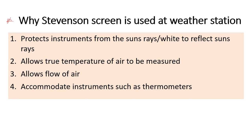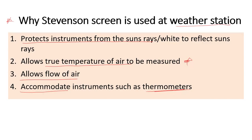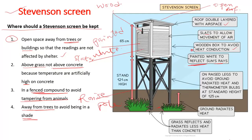You may see questions asking why the Stevenson screen is used at weather stations. It helps to protect instruments from sun rays, as the white color reflects sunlight. It also allows the true temperature of air to be measured, rather than an artificially high temperature. It allows flow of air inside the wooden box — that is why it is slated and has an open roof. It also accommodates instruments such as thermometers. The roof helps to reduce direct sunlight affecting the instruments inside.